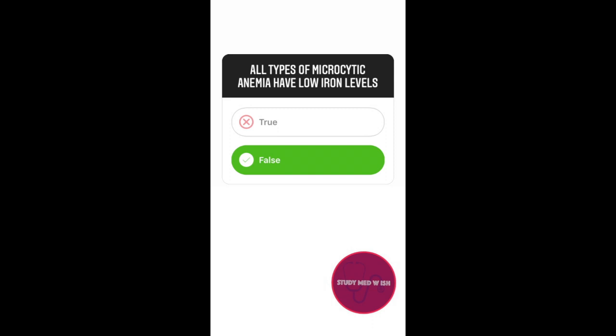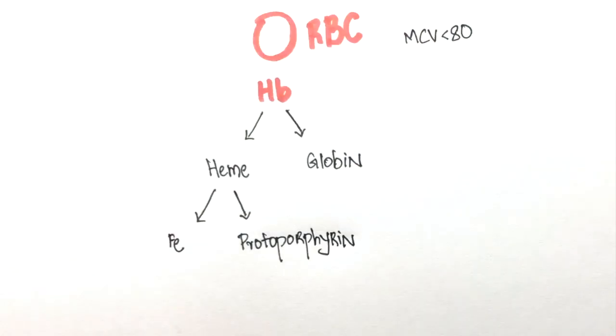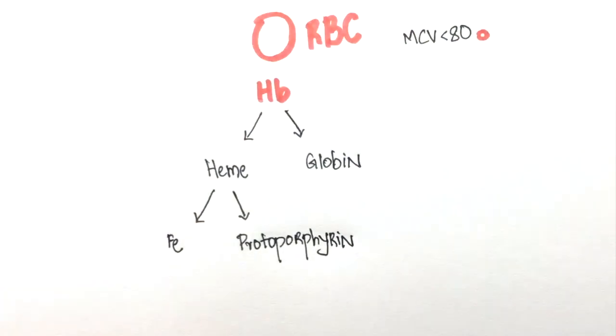Anemia is considered microcytic if the mean corpuscular volume is below 80. This means that the red blood cells are smaller than normal.